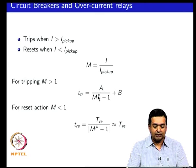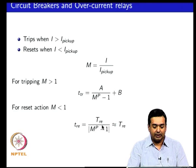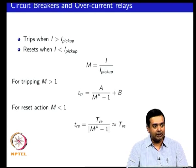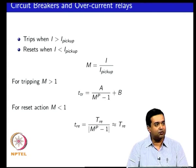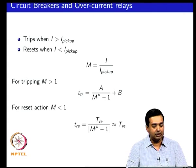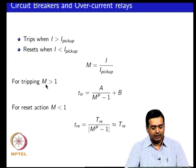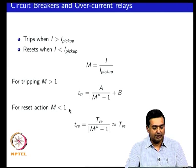The parameters A, B, P, T, and R_e are constants based on the type of characteristic the breaker or relay is following. For m greater than 1, it trips, and for m less than 1, it resets.